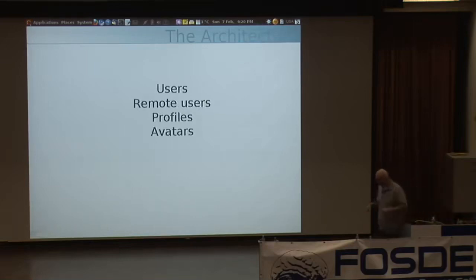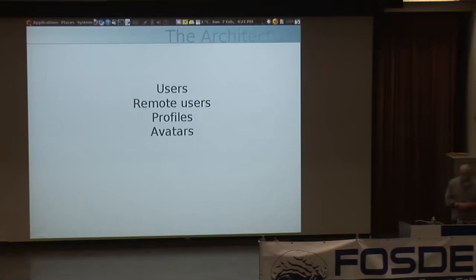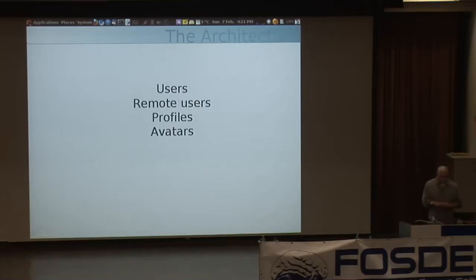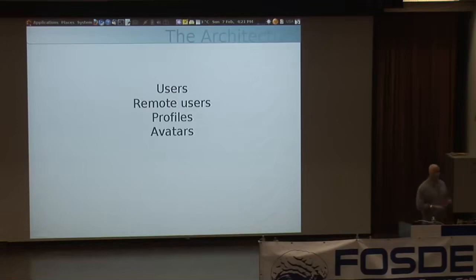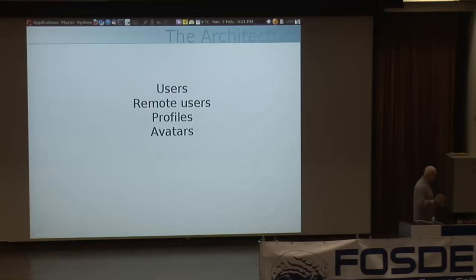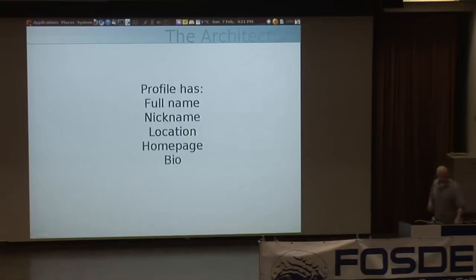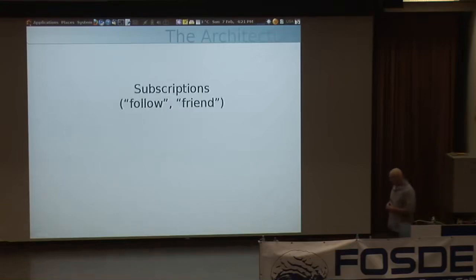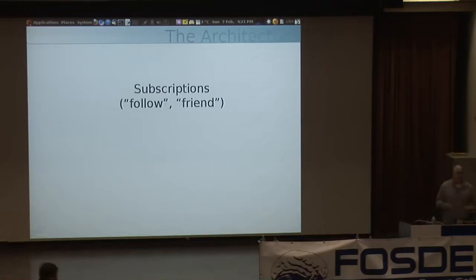Some of the things we model in our system: our system has users who have a presence. We also model remote users so that if you subscribe to someone over a remote system, we keep a mirror record of that person's profile information. Profile includes: your name, biography, location, homepage. We also keep avatars in various sizes stored with the profiles. The model for following is called subscriptions — not 'following' or 'friending' — just because it's neutral and works for both business and personal use.